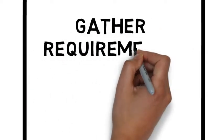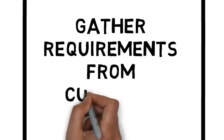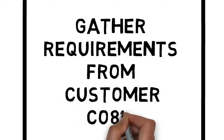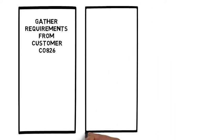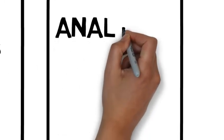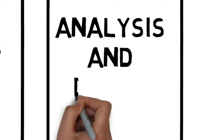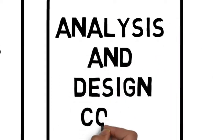The first thing you're going to do is gather requirements from the customer. They call you up and say, hey, I want some software written. We listen to them, we gather the requirements, and then we take those requirements and we do some analysis and design. We teach that in 826 Systems Analysis.